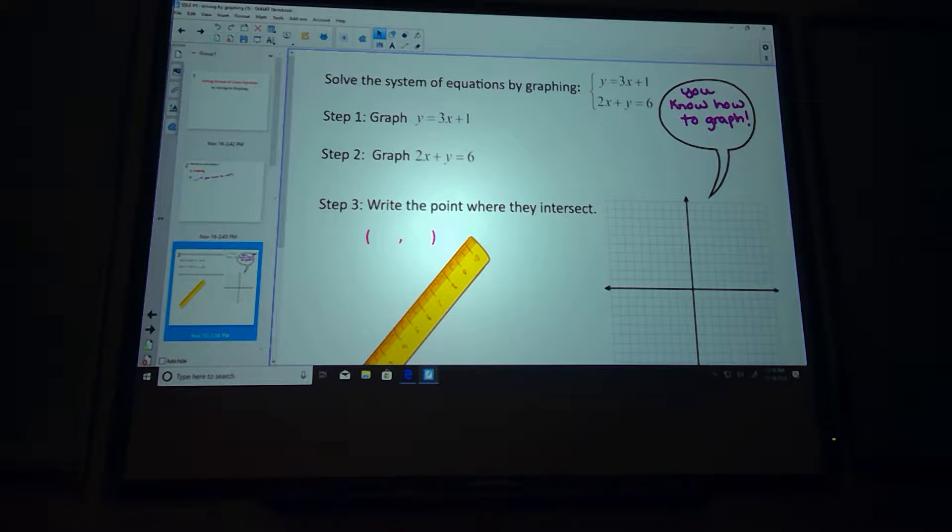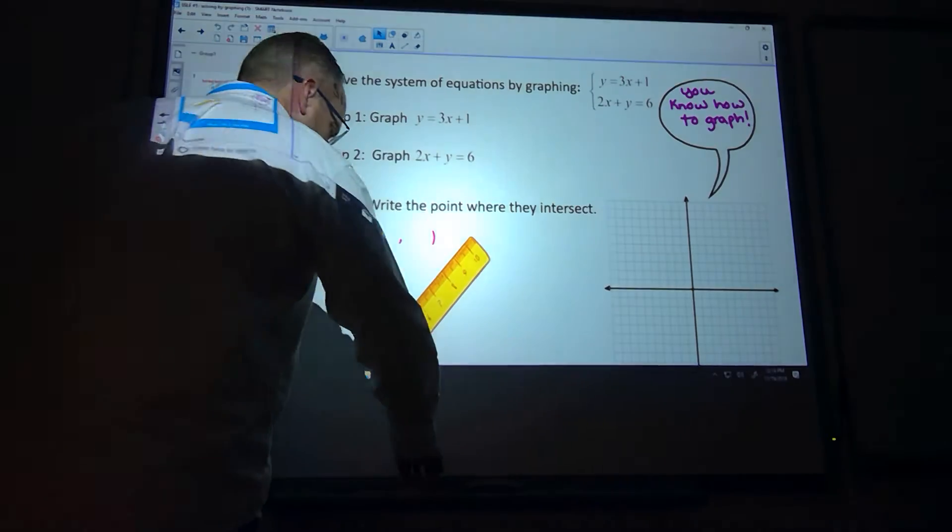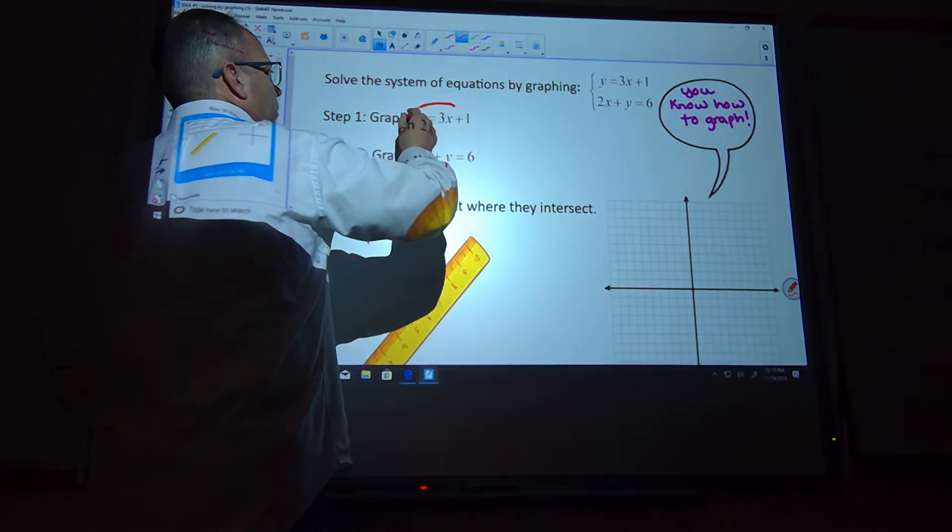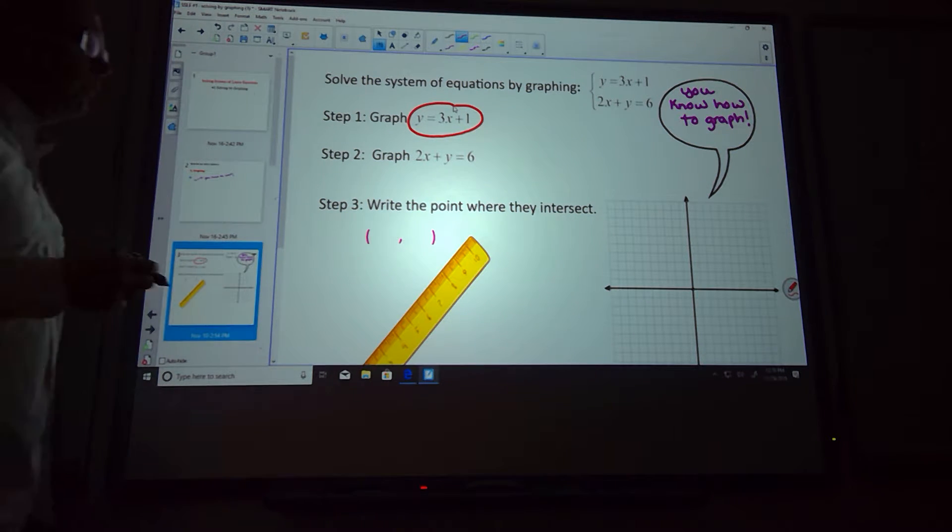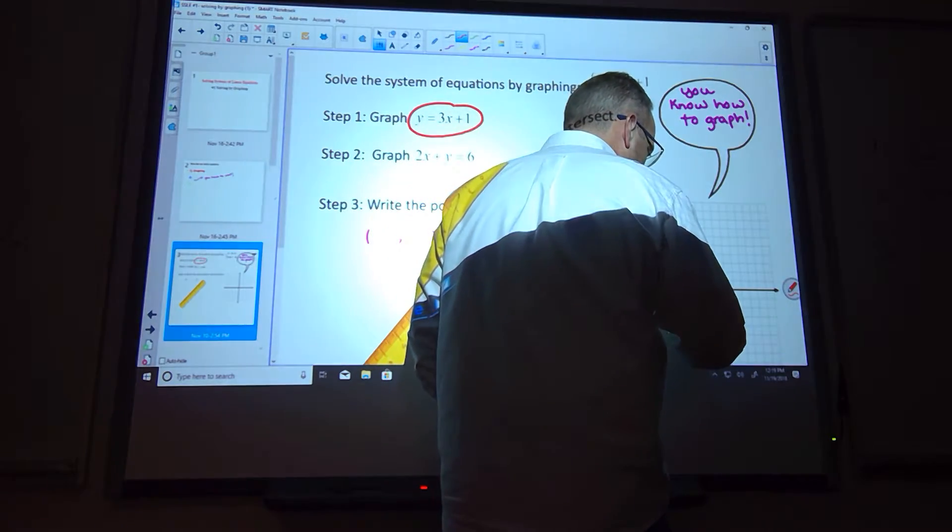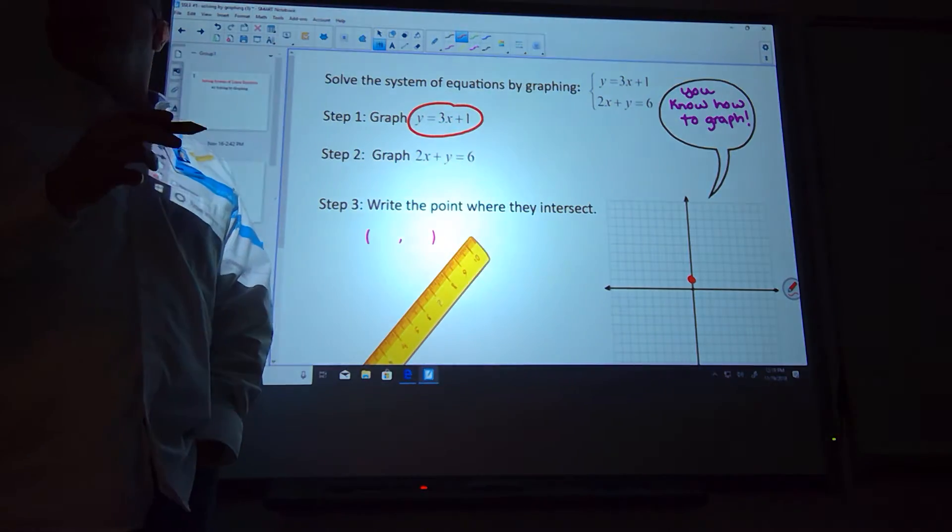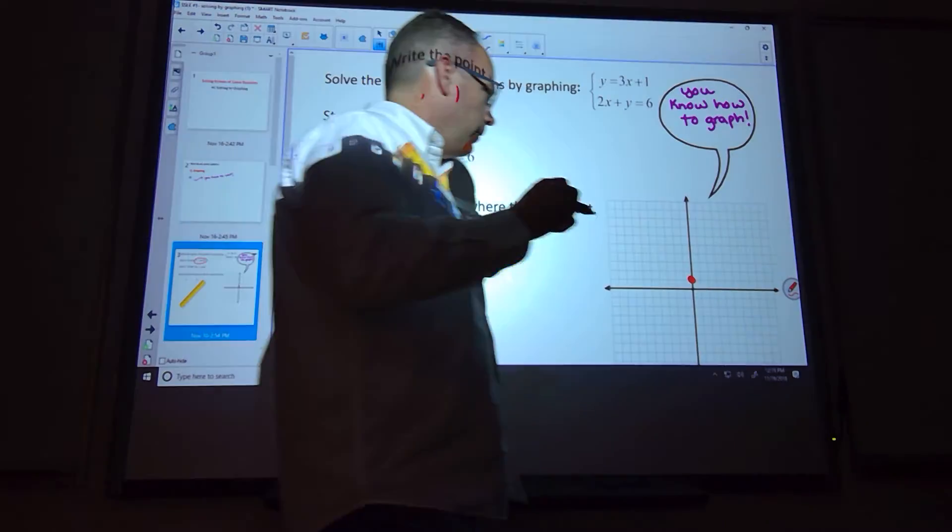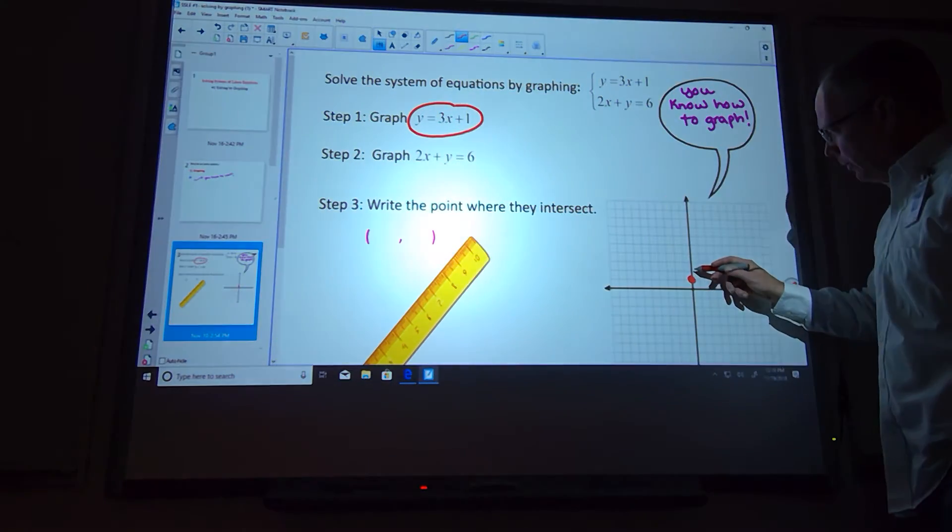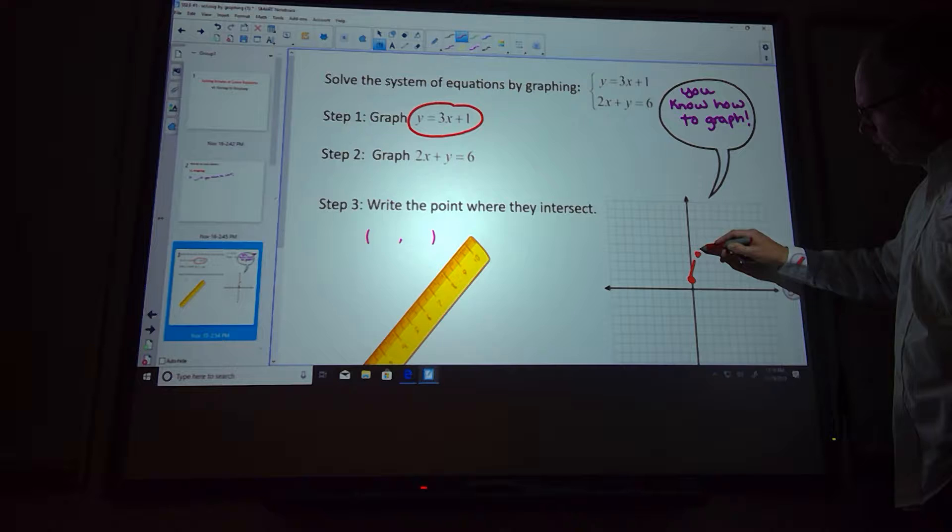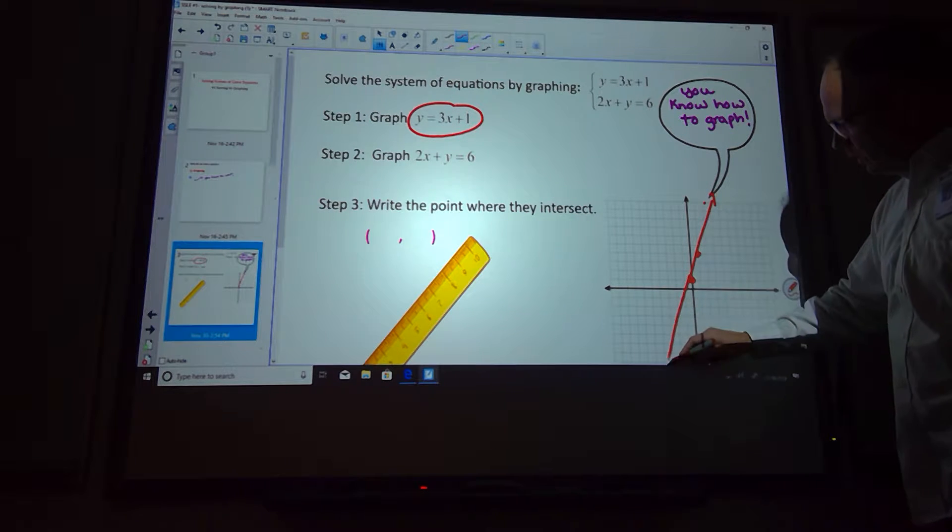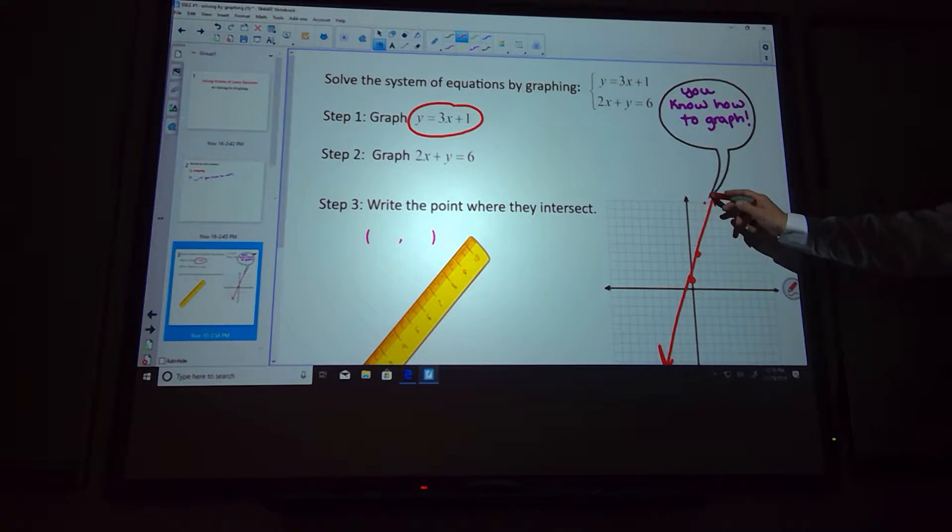So where these two lines could cross is the solution to the problem. So let's take a look at our very first one. So I'll do this one in red. What is my y-intercept? One. Good. So one right here. And then my slope does what from that point? Up three and over one. So up three, one, two, three, and over one. And I can keep going on and on forever and ever. But for the most part, this is going to do that. You're going to try and draw it as straight as you possibly can.